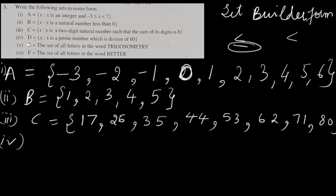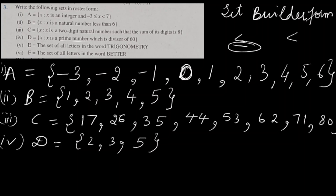The fourth one is the set where X is a prime divisor of 60. Many numbers divide 60, but we need only prime numbers. The prime numbers which divide 60 are 2, 3, and 5. 5 is also a divisor of 60 and is a prime number. So the set is {2, 3, 5}.